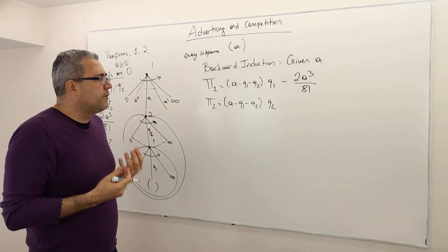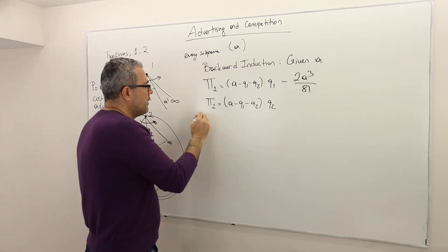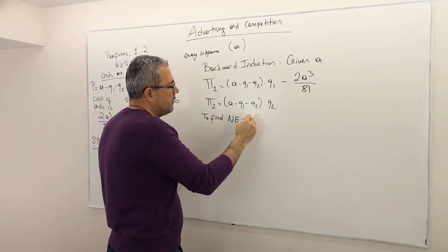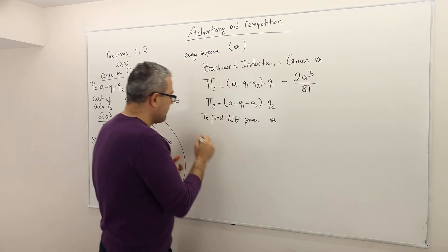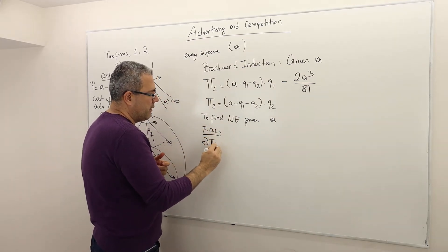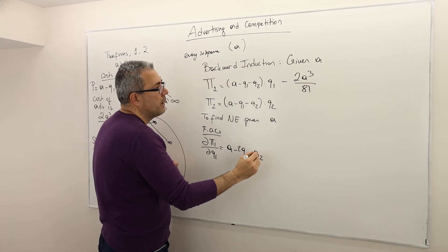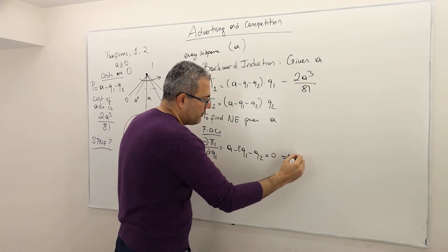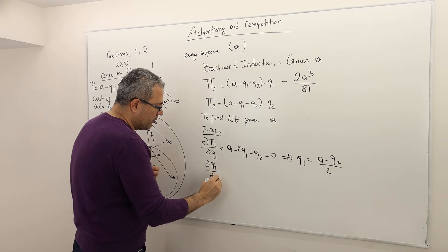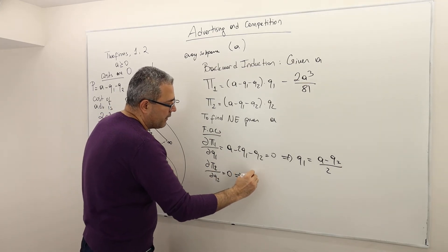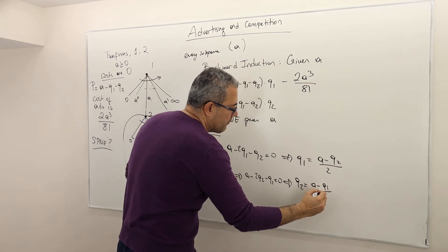I need to find the best responses of firm 1 and firm 2 and solve them simultaneously to find the Nash equilibrium given A. The first-order condition for firm 1 is: ∂π₁/∂Q1 = A − 2Q1 − Q2 = 0, giving Q1 = (A − Q2)/2. For firm 2: ∂π₂/∂Q2 = A − 2Q2 − Q1 = 0, giving Q2 = (A − Q1)/2.